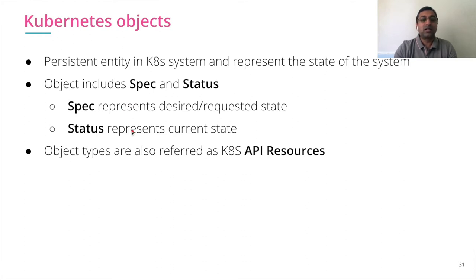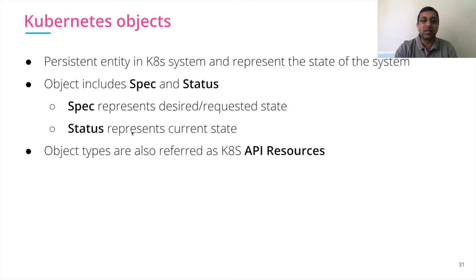Object types are also referred to as API resources in the Kubernetes ecosystem. So if you hear API resources or if you hear object types, they are kind of the same thing.